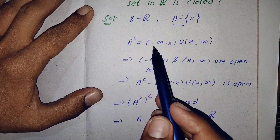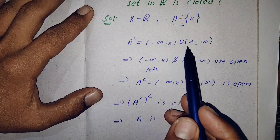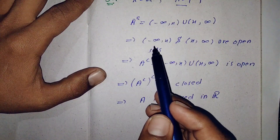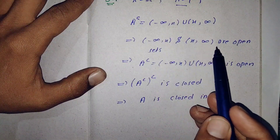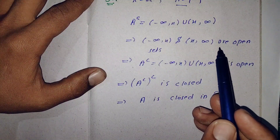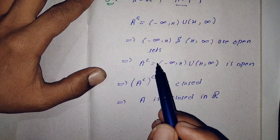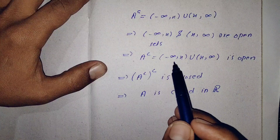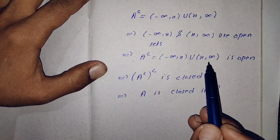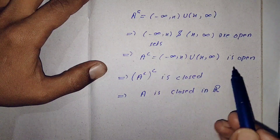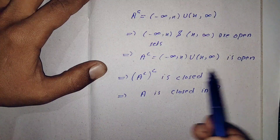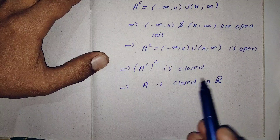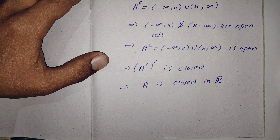A complement = (-∞, x) ∪ (x, ∞). Since (-∞, x) and (x, ∞) are open sets and the union of open sets is again open, A complement is open. Taking its complement again gives a closed set, which shows that A is closed in R.